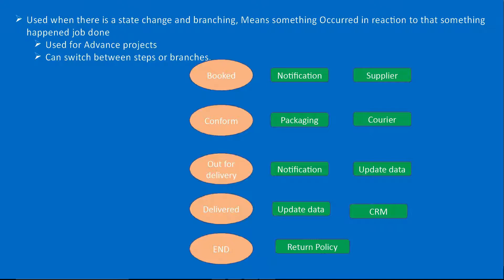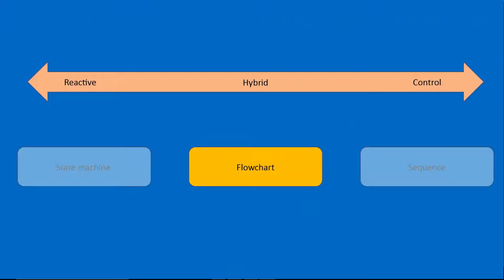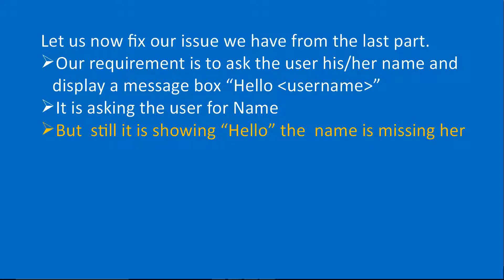State machine is used in more complex and long-running processes. The benefit is we can switch between branches — for example, if the user is not available during 'out for delivery', the state doesn't move to 'delivered'; it goes back to 'out for delivery'. Flowchart is a kind of mix between state machine and sequence — it's a hybrid model. We'll understand each one in more detail going forward.